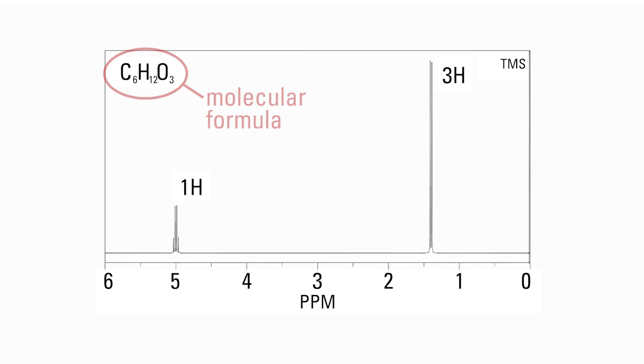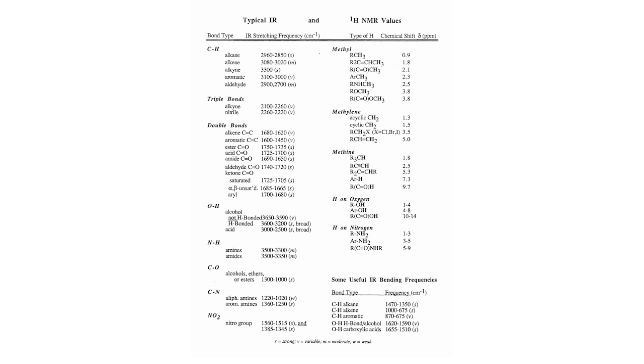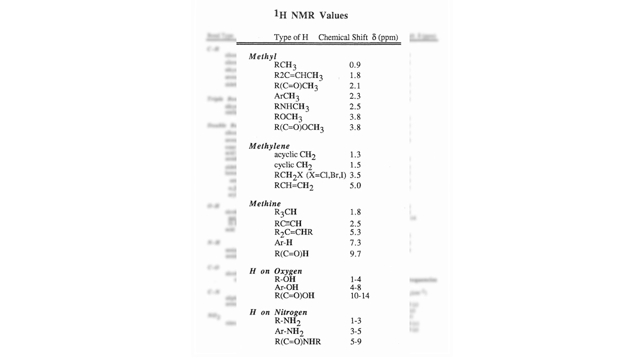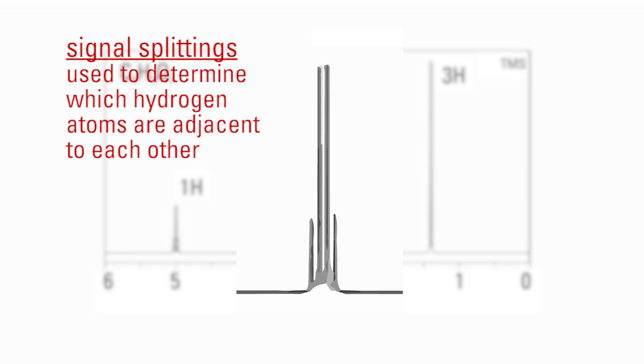First, you must be given the molecular formula so you know how many of each type of atom are present. Second, you will count the number of different signals and their relative integrations to see how many different sets of equivalent hydrogen atoms are in a molecule, and how many of each set are present. Then, you will compare the chemical shifts of each signal to the table in your book or e-book to identify what functional groups are present. Finally, you will use the signal splittings to determine which hydrogen atoms are adjacent to each other.